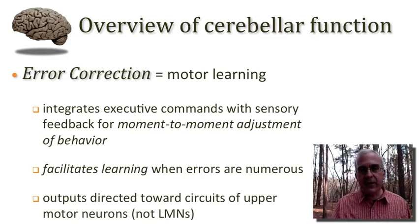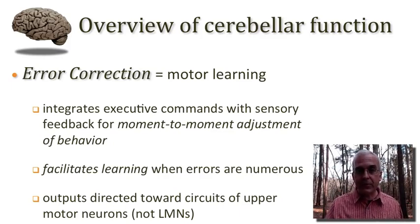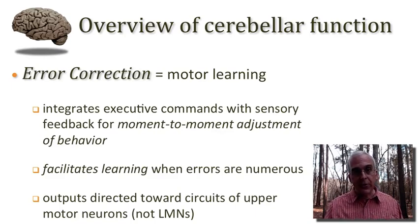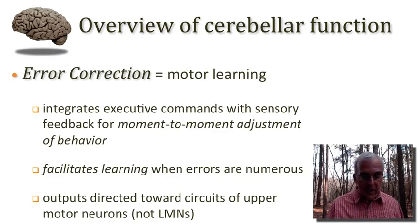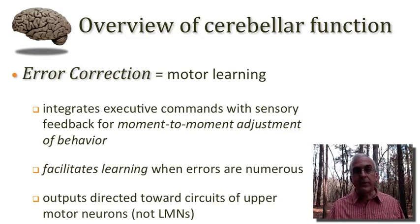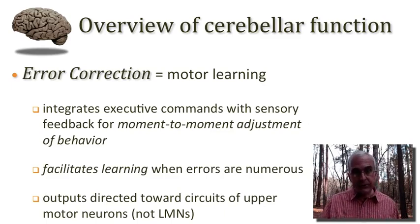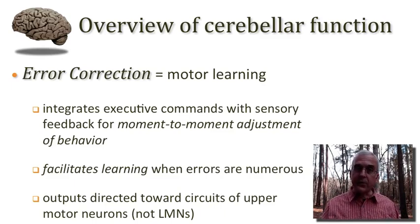One key point I want you to appreciate about the organization of cerebellar circuits is that the cerebellum does not engage the lower motor neurons directly. In this sense, it's similar to the basal ganglia, which also did not engage lower motor neurons directly. Rather, the output of the cerebellum is directed towards circuits of upper motor neurons. One important means by which the cerebellum does so is by interacting with the thalamic nuclei that send projections to the motor cortex.